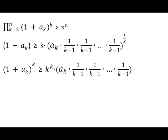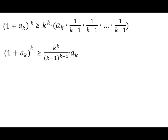Since the product on the left side of the inequality we want to prove has each term to power k, we need to raise both sides of our inequality to power k. In the process, the exponent 1 over k on the right side happily goes away. Now we can rewrite our proven inequality for each term in more compact form.